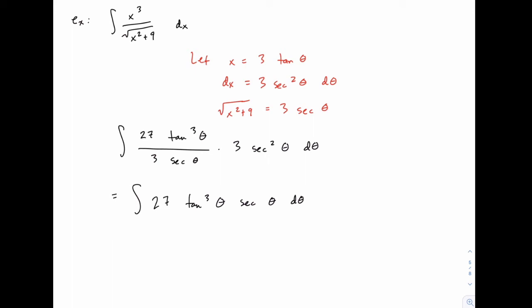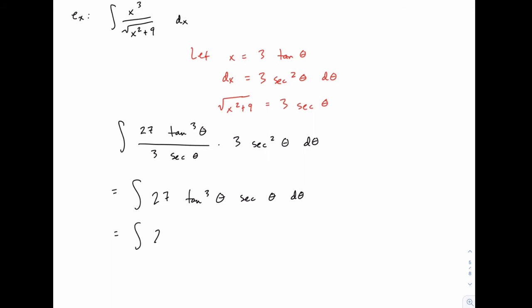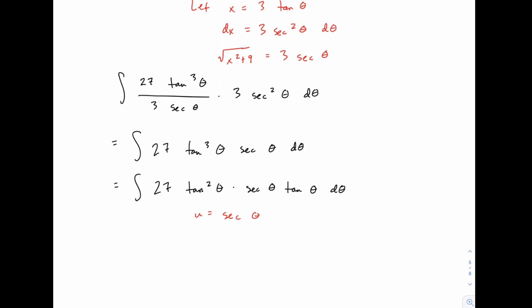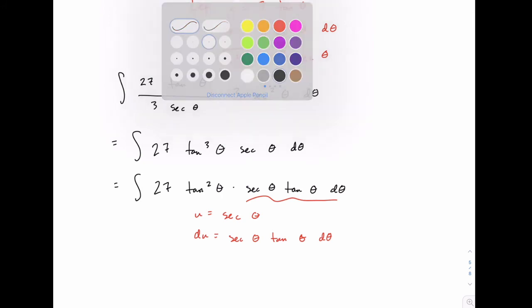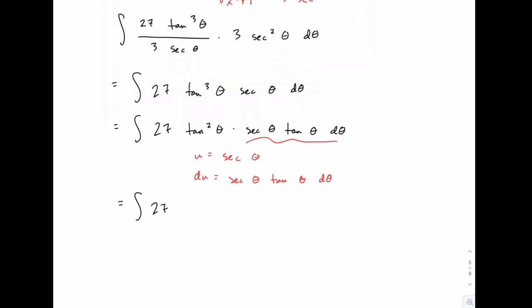So again for this one we're going to separate off a secant tangent, so we'll rewrite this as 27 times tangent squared times secant tangent. The secant tangent is going to be our du, which means our u should be secant theta because the derivative of secant is secant tangent. That means this will get replaced with du and this part needs to be rewritten in terms of secant. So we'll rewrite this as 27 times secant squared theta minus 1, and then we can make our substitution in terms of u.